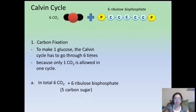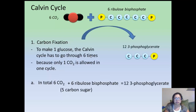Together they will form twelve 3-phosphoglycerates. You start off with six ribulose-biphosphate groups, and if it runs through six times, that will give you twelve 3-phosphoglycerates. That way the carbon stays a consistent number.